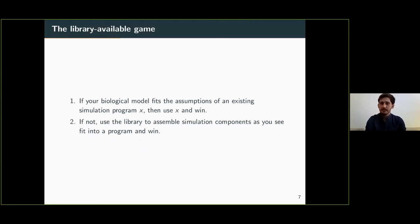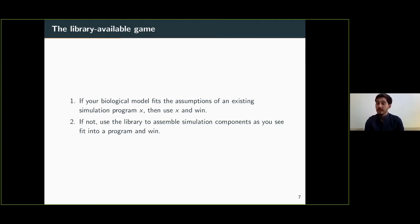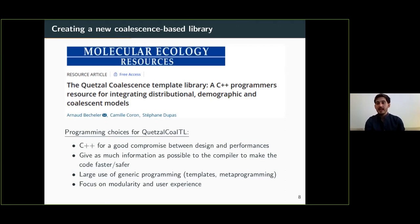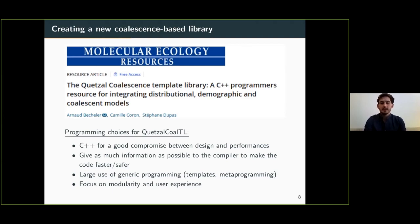When you have a library, the game is different. If there's a close fit among available programs, you use the program and you win. If not, you go to the library, gather the components you need, and rapidly build a new version of a program, run your simulations, run your ABC methodology, and publish your data. That's why we created a new coalescence-based library during my PhD — because the Asian hornet process required this tool. It was published in 2019 in Molecular Ecology Resources as the Ketzal COALT library — COALT for Coalescence Template Library.